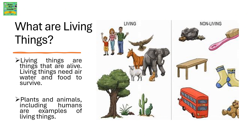What are living things? Living things are things that are alive. Living things need air, water, and food to survive. Plants and animals, including humans, are examples of living things.